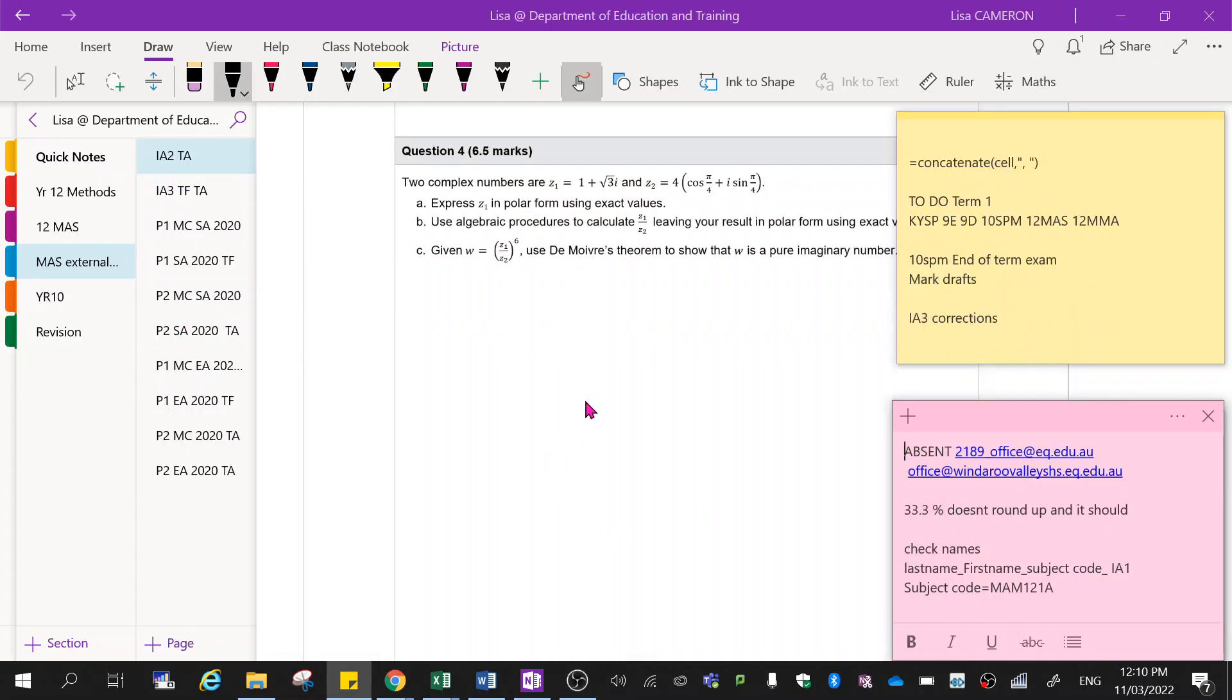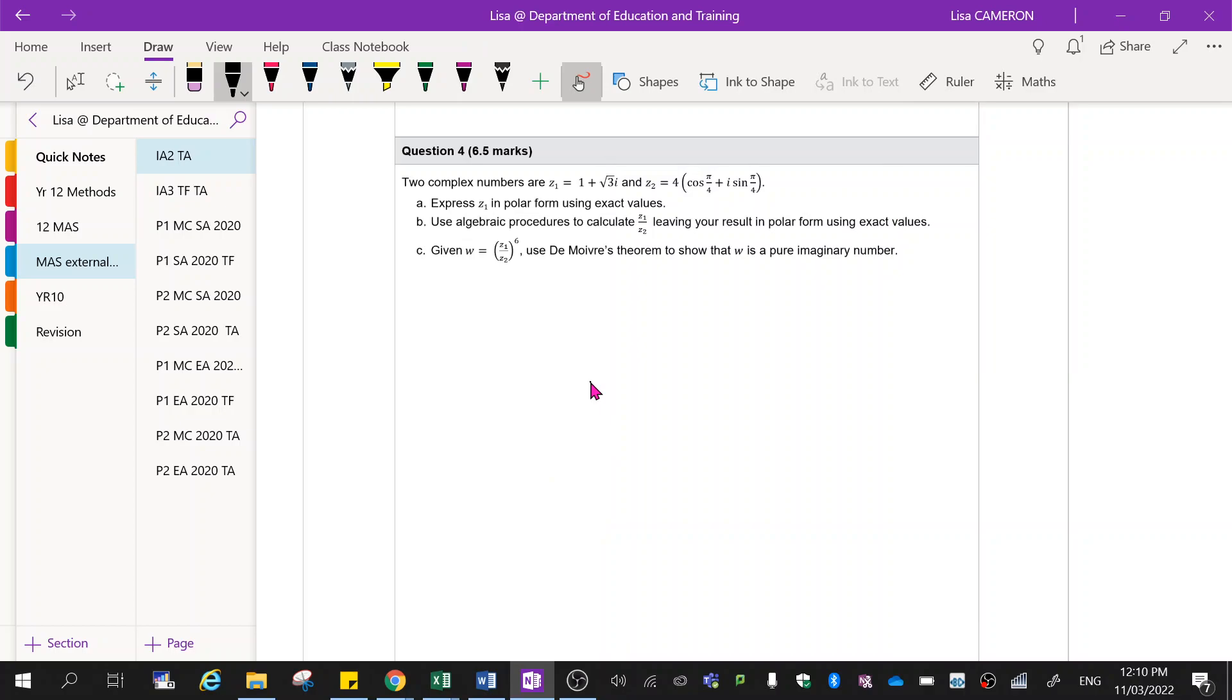Okay, so today we're going to be running through some stuff about complex numbers. Now starting with A, we're going to express Z1 in polar form using exact values. Now polar form means that we need to find the modulus or R and we need to find the angle and then we're going to put it into cis form.